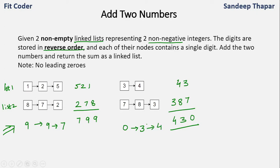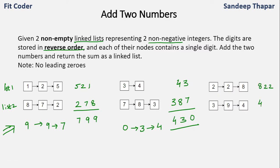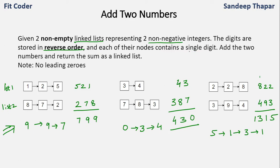Let's take one more example. The numbers are 822 and 493, so in this case the sum will be 1315, so the linked list will be 5 1 3 1. To summarize: we'll be given two linked lists representing numbers stored in reverse order, each node containing a single digit, and we have to add the numbers and return the sum as a linked list.